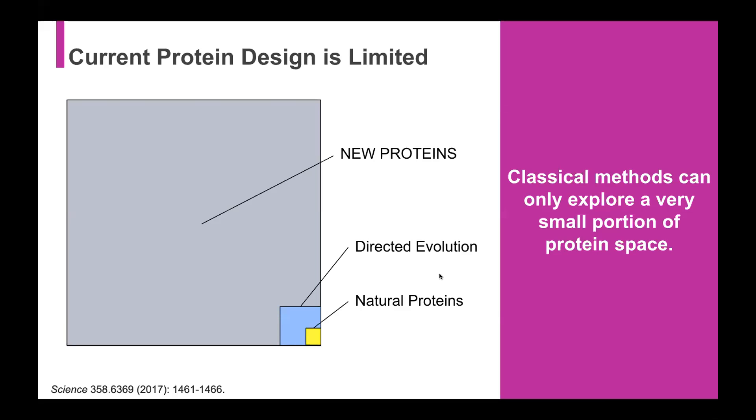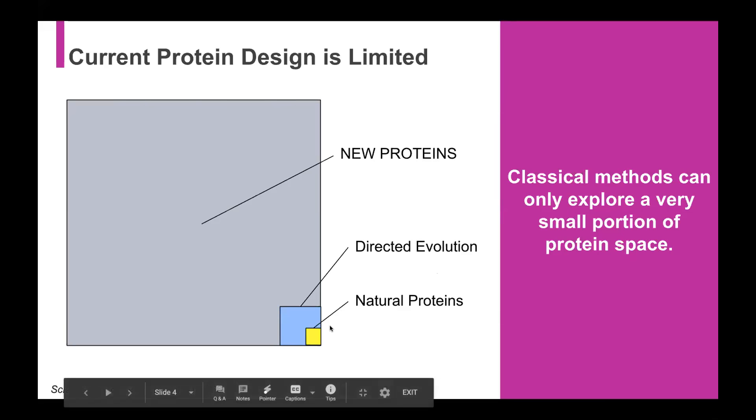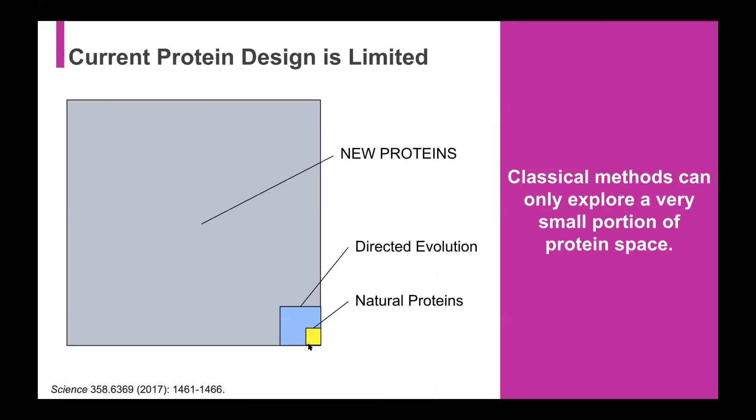So without getting into the math, if you look at the number of proteins that happen naturally in nature, whether it's in our bodies or just outside in biological systems, those represent a very, very small fraction represented here in yellow of all possible proteins that could be developed.